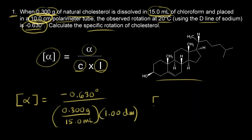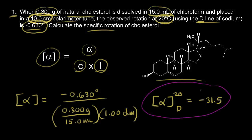So let's write that down. The specific rotation at 20 degrees C, using the D line of sodium, is equal to negative 31.5. Sometimes you see this written with a degree sign, but normally we don't include units for specific rotation — it just depends on the textbook you're using.